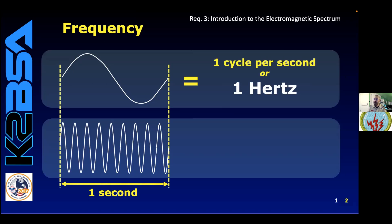In radio talk, we give a name to cycle per second. We call it Hertz, named after an old guy who is a radio pioneer. In this instance, one Hertz. If nine cycles go by in one second, we would call that frequency nine Hertz. What would we call it if a thousand cycles passed by in one second? About one million, seven million, or a billion?